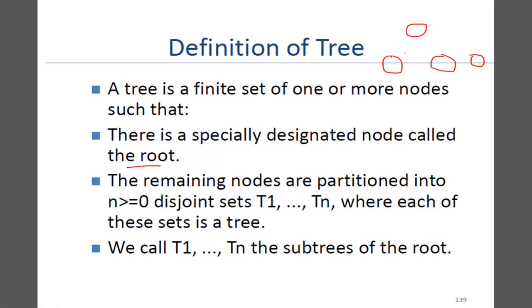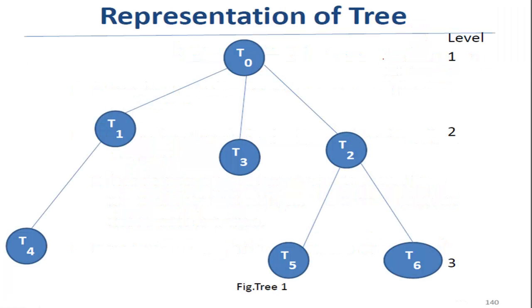The remaining nodes can form many subtrees. Each of these nodes is a subtree. This entire thing is a tree, T0 is the root node, T1, T2, T3 are subtrees. These are called nodes and these connections are called edges.